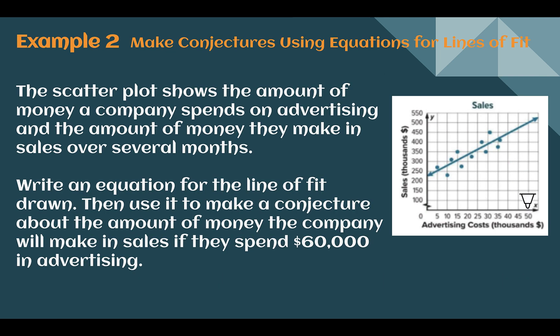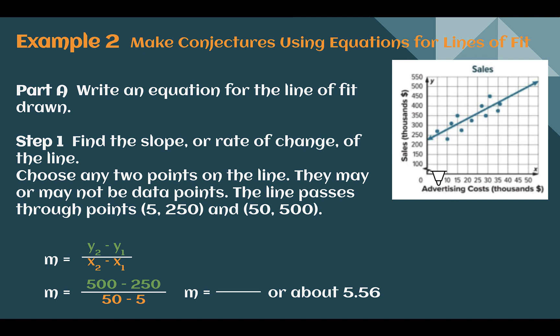Example 2, make conjectures using equations for lines of fit. The scatter plot here shows the amount of money a company spends on advertising and the amount of money they make in sales over several months. So the more they're spending on advertising, the higher their sales goes. So let's write an equation for our line drawn, and then we're going to predict if they spend $60,000, so that's over here, how much would they make in their total? Where would that end up crossing? So just as we've been doing, let's find the slope.